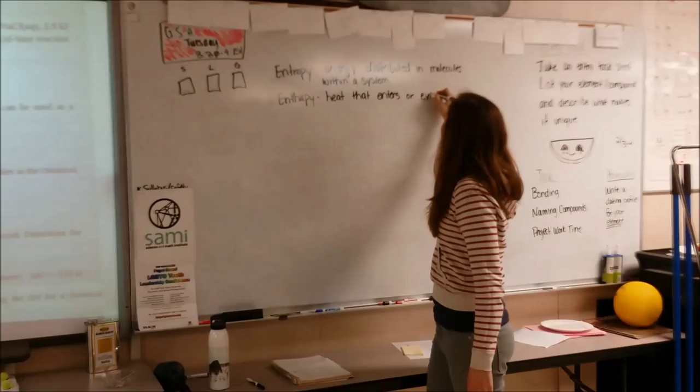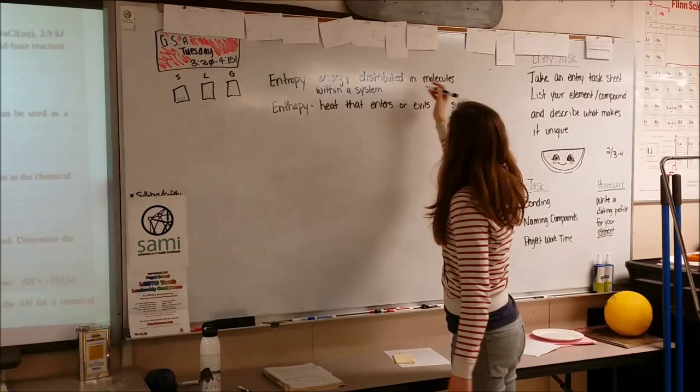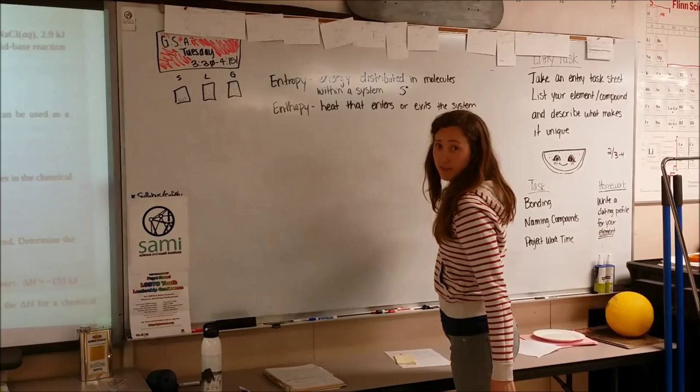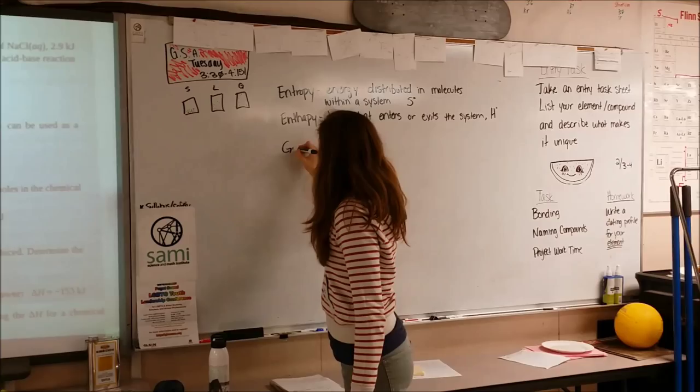To go ahead and get our values, entropy is going to be S, and we put a little circle next to it. Enthalpy, when we're using that one, is going to be H. And then the last definition we're going to add in here is Gibbs free energy.